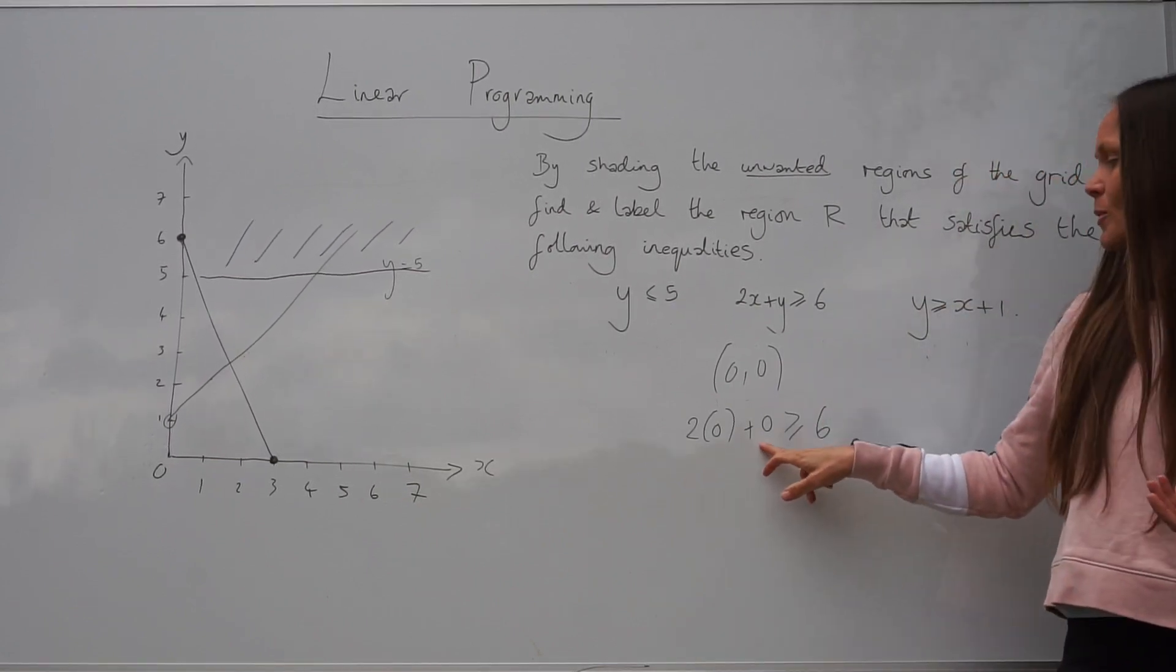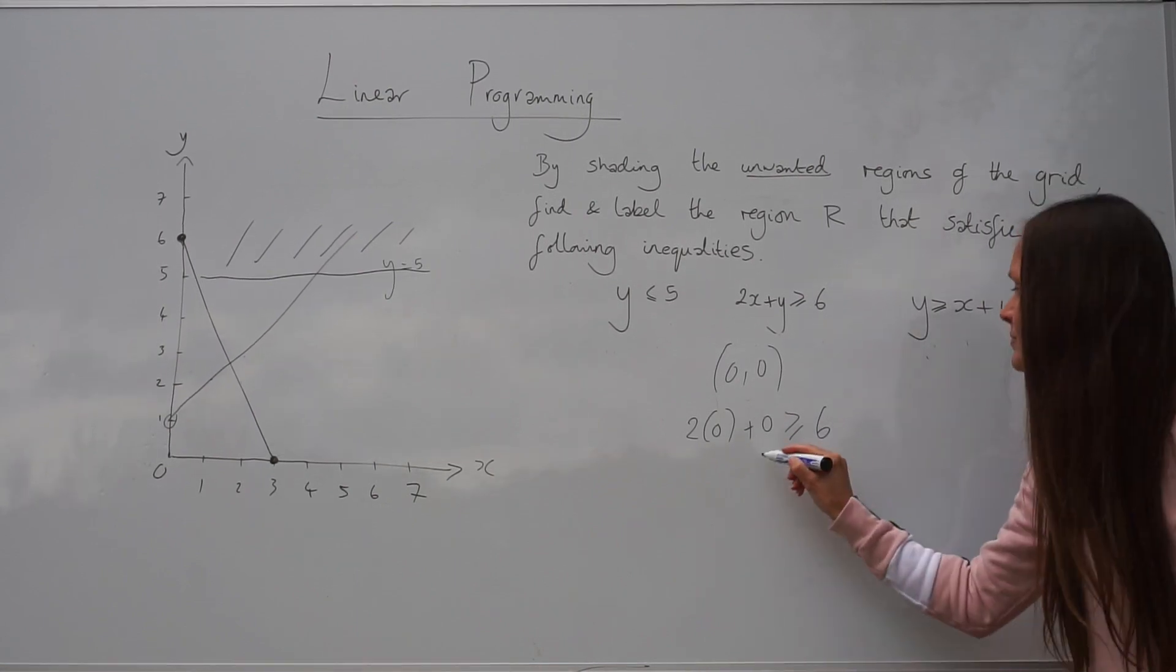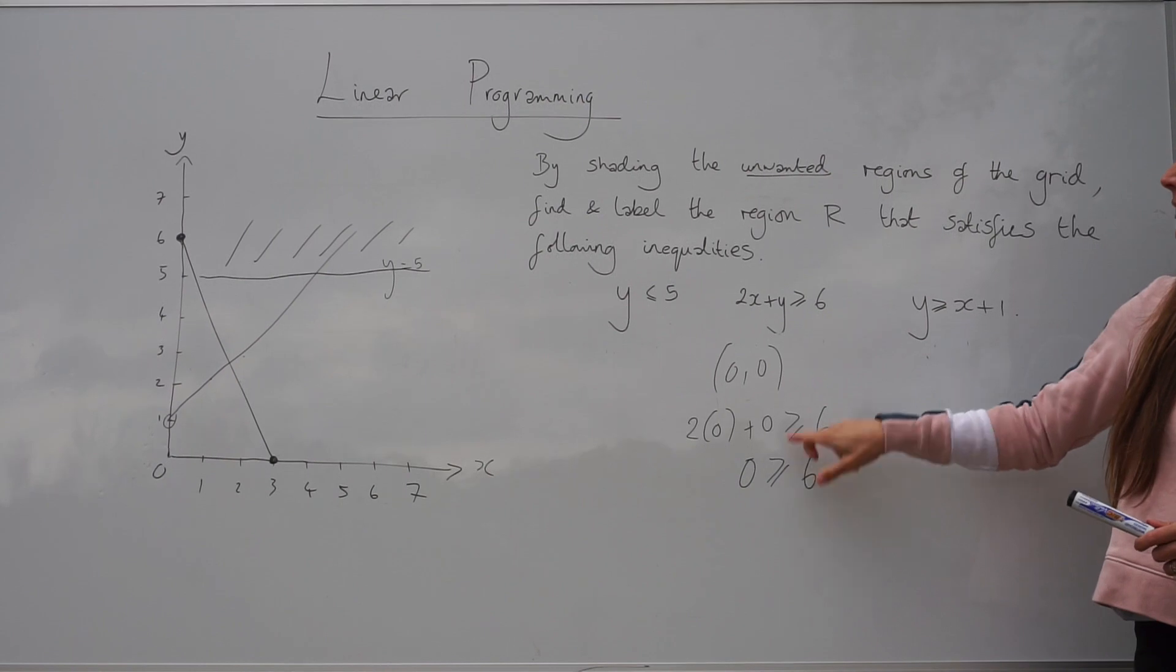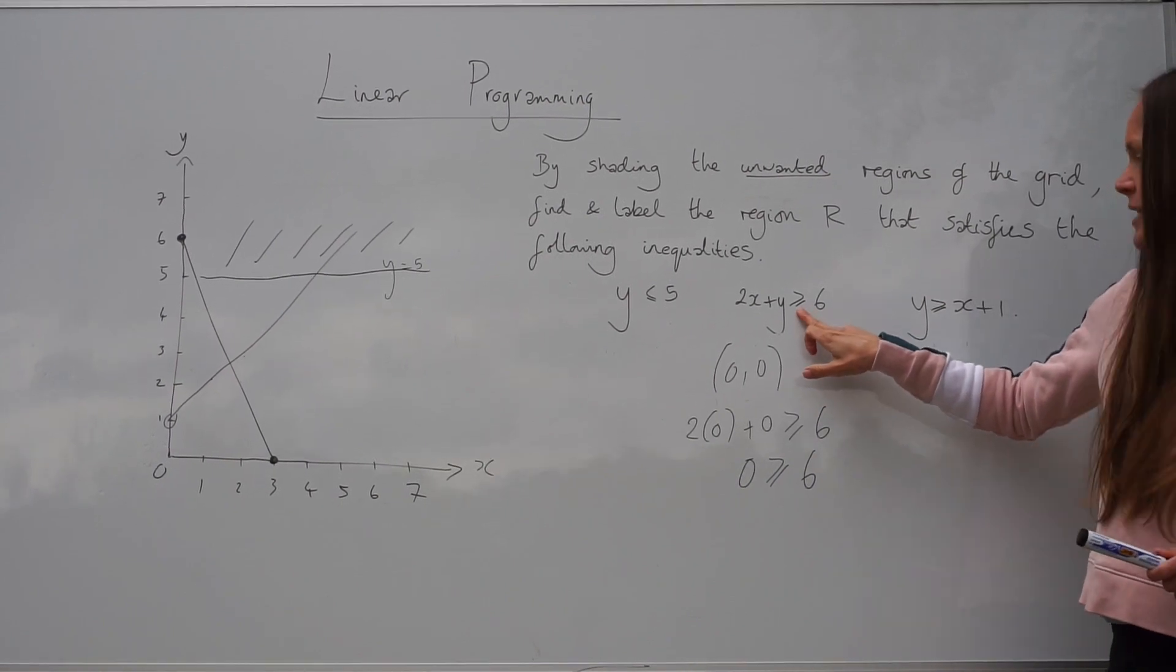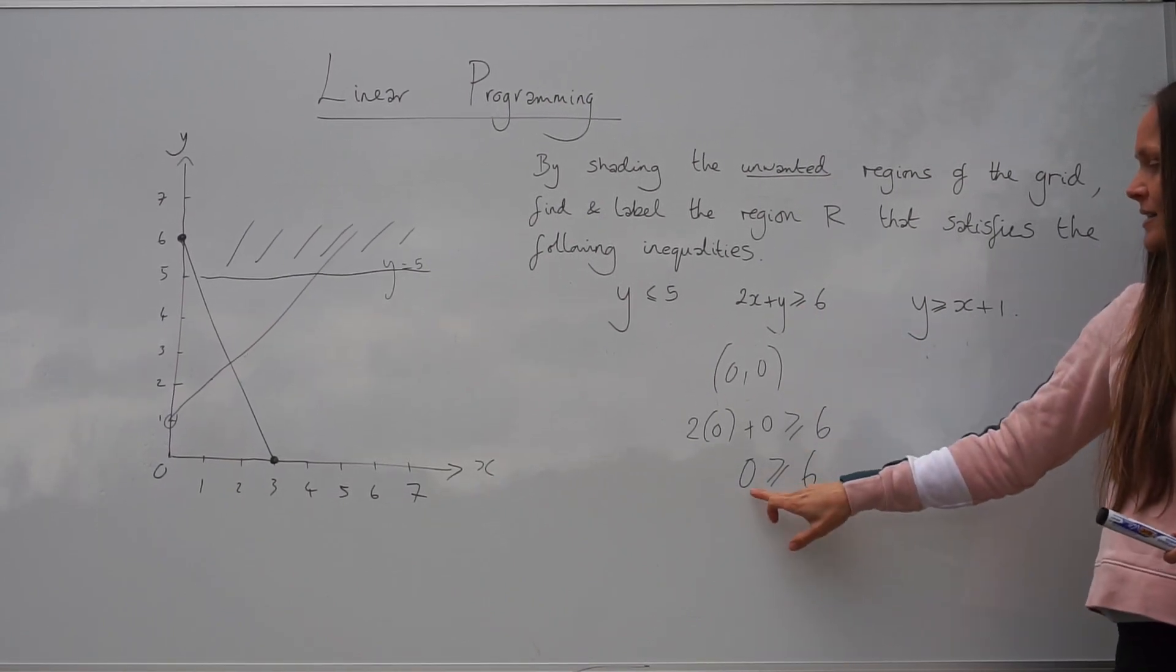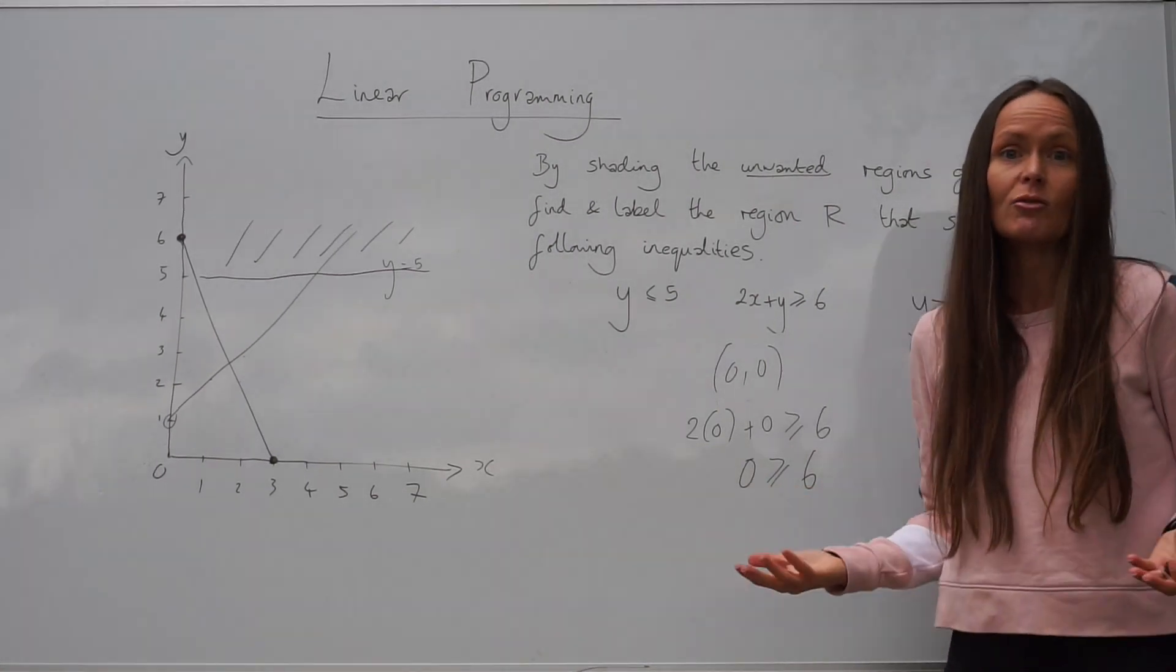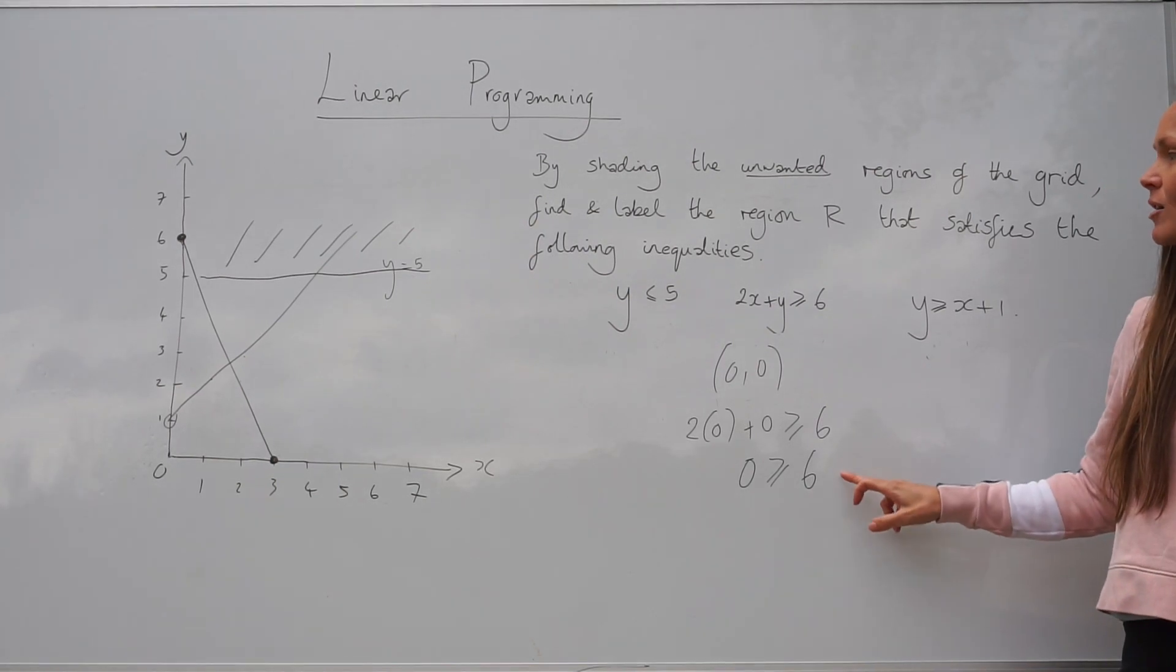Well, 2 multiplied by 0 plus 0 is just 0. Remember, the symbol is the same as what was given in the question here. This reads 0 is greater than or equal to 6. Well, that's false. 0 is smaller than 6. So this is incorrect.